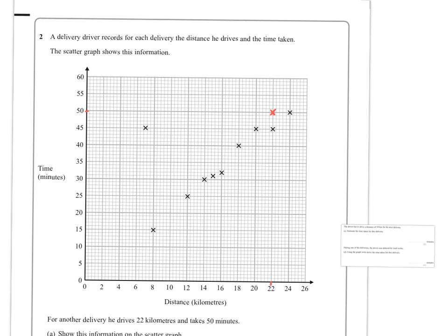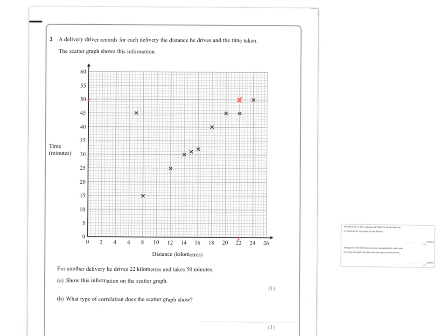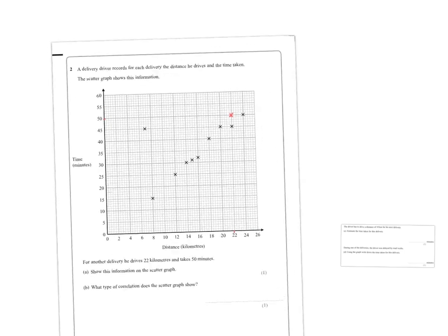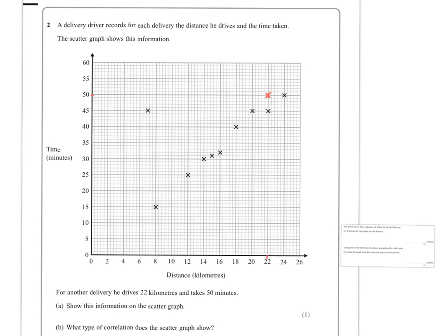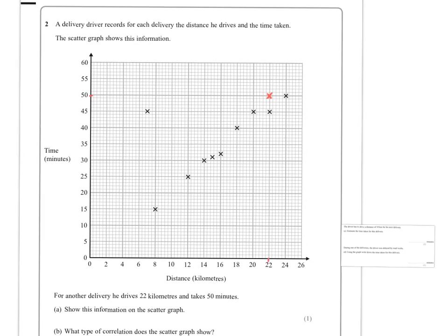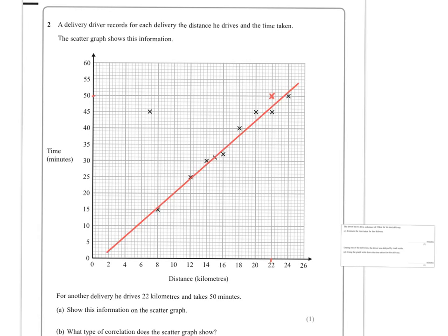The next part of the question, well that says what type of correlation does the scatter graph show. Well for me this would be a good opportunity to draw the line of best fit, because visually that would give me quite a few clues as to what was going on here. And I can see that nearly every single part of the data fits nicely to that straight line. The only one that doesn't is this one, which is an outlier.